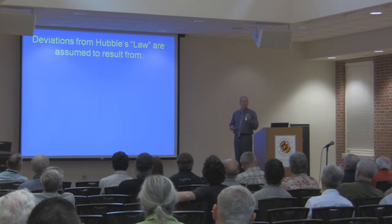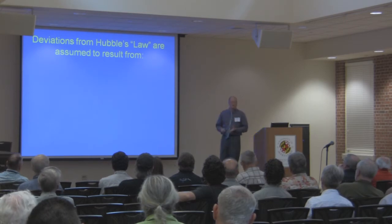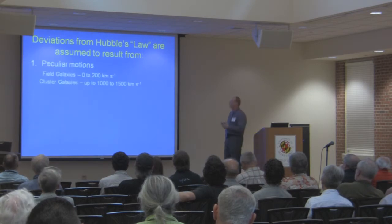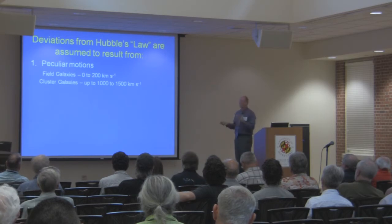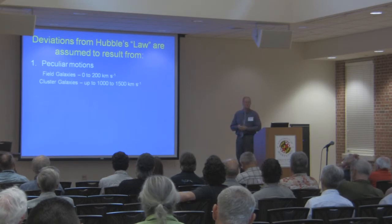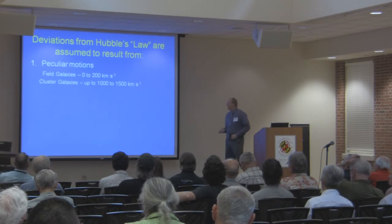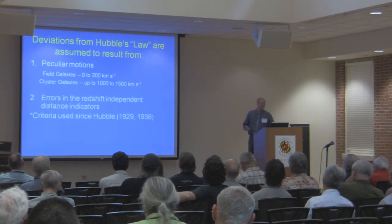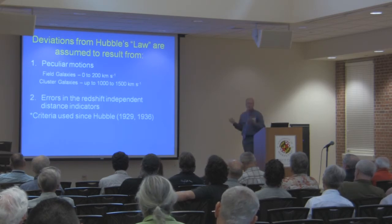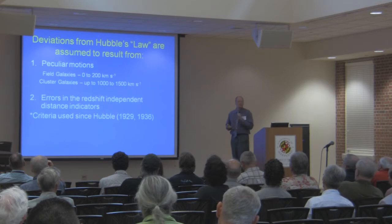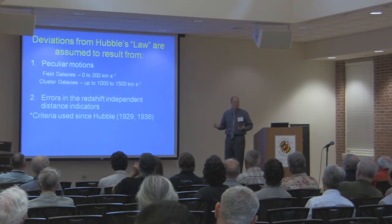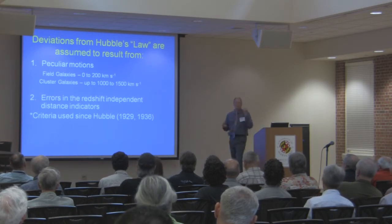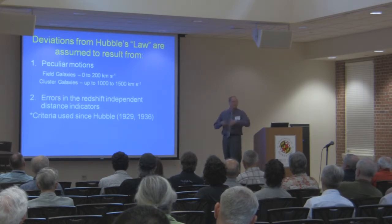The deviations you get from a smooth Hubble Law, where every galaxy would exactly follow that relation, are assumed in the mainstream view to come from two causes. Number one: peculiar motions — gravitation-induced motions of galaxies in clusters. For the largest clusters, they would accept up to maybe 1,500 kilometers per second as the largest peculiar motions. The other explanation is errors in distances to the galaxies. I want to point out that this criteria Hubble used in 1929 and 1936 hasn't been changed at all — everybody just assumes that if something doesn't fit Hubble's law, it's either a distance error or a peculiar motion.